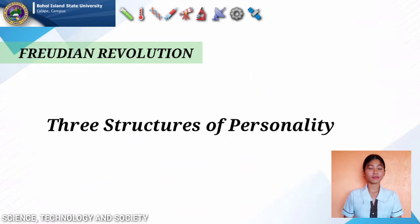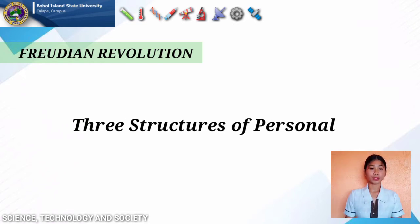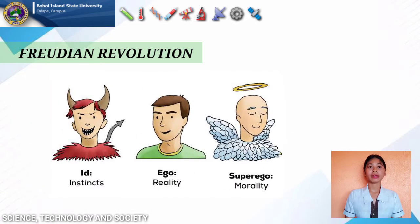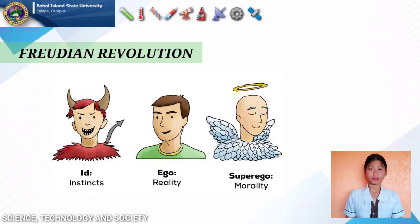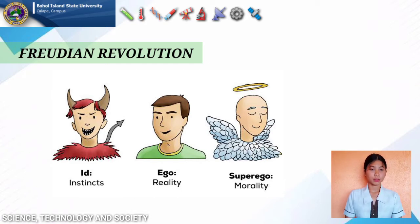The three structures of personality: Freud also believed in three structures of personality — the id, ego, and superego. The id is the animalistic nature of man, known as the makahayop personality. It is a destructive and pleasure-seeking structure. The ego is the human nature of man, or makatao. It acts according to laws and morals, is limited by the bounds of reality, controls the id, and acts as the mediator between the id and superego.